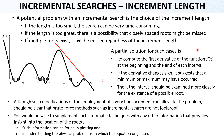A partial solution for such cases is to compute the first derivative of the function. If we know the function, we can calculate the first derivative at the beginning and at the end of each interval. If the derivative changes sign, it suggests that a minimum or maximum may have occurred. For example, if the derivative is negative here and positive here, there is a root in that interval. The interval should then be examined more closely. Although using a very fine increment or the derivative can alleviate the problem, brute force incremental search methods are not foolproof and can still be problematic.